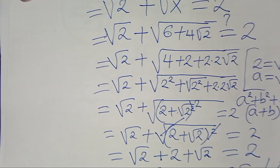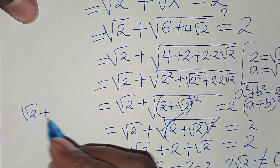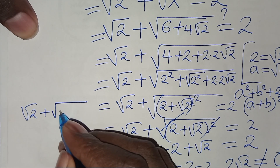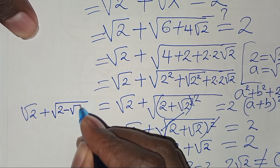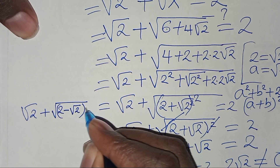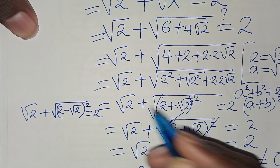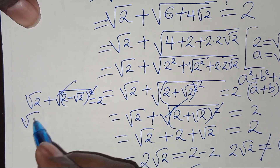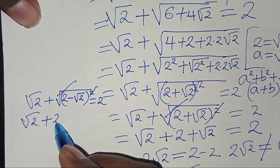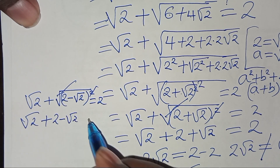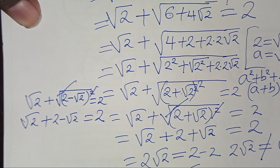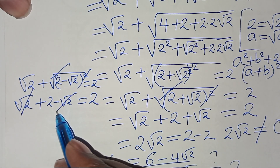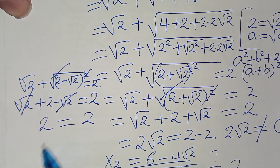Applying the identity, the inner expression becomes (2 − √2)². Taking the inner square root gives √(2 + (2 − √2)) = √(2 + 2 − √2) = √(4 − √2)... Simplifying: √2 + 2 − √2 = 2, so we get √2 = 2. Wait — the √2 terms cancel: √2 + 2 − √2 = 2, confirming 2 = 2.